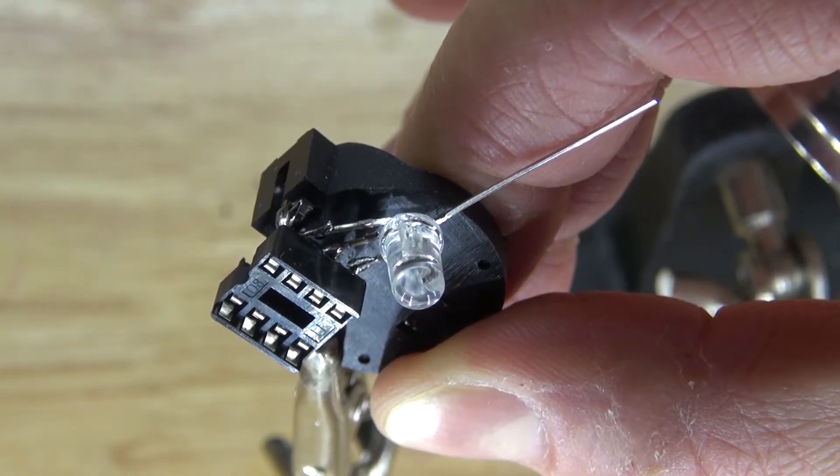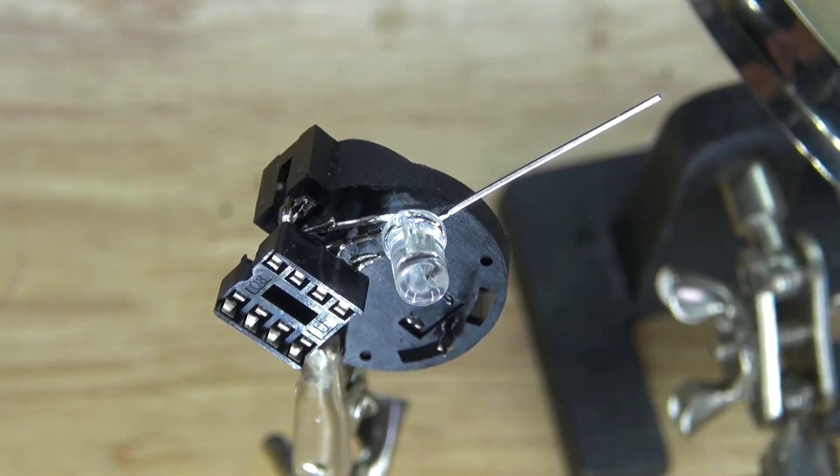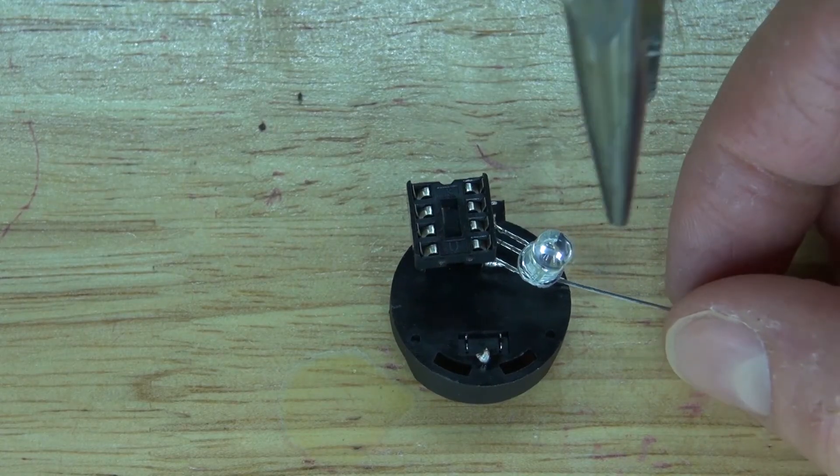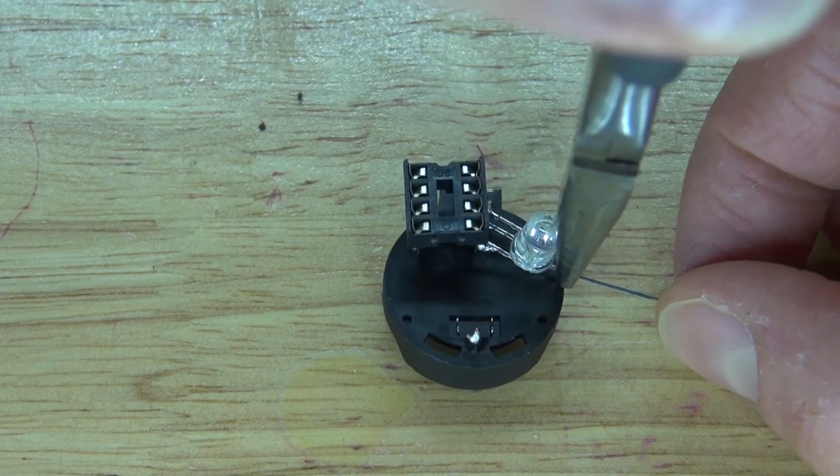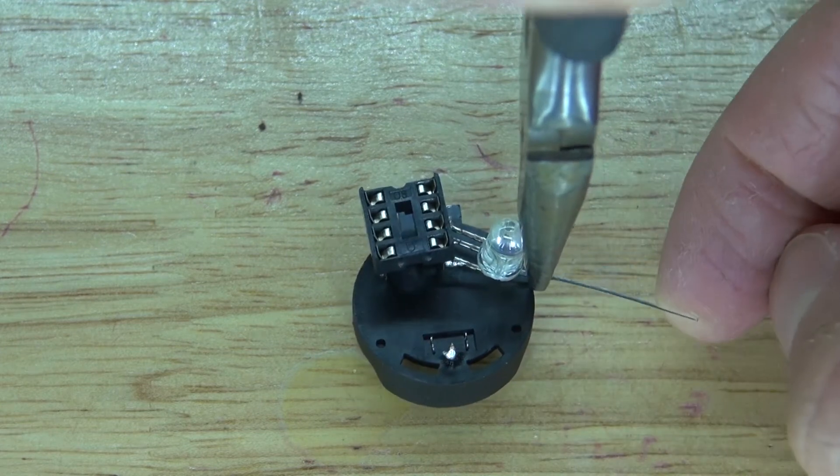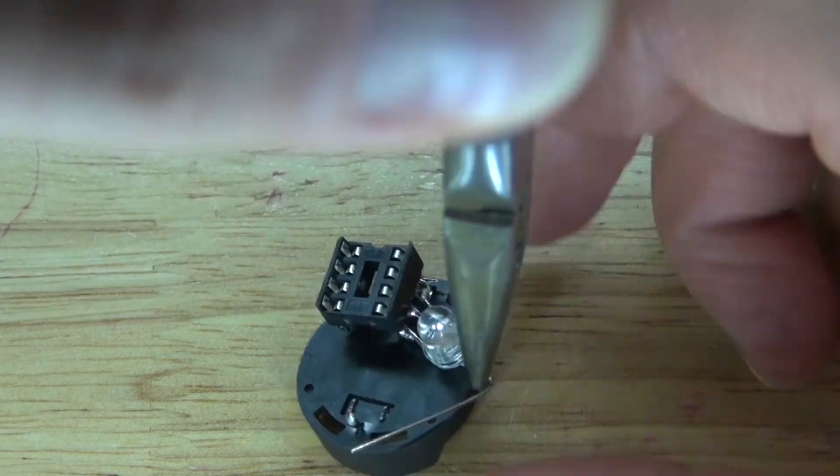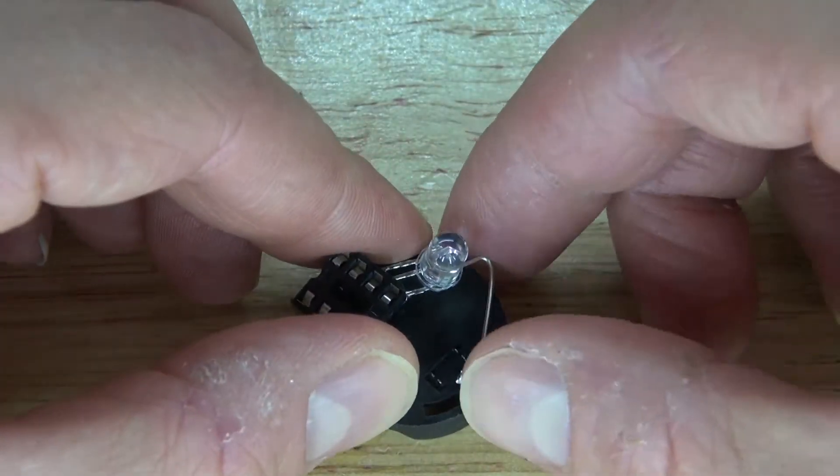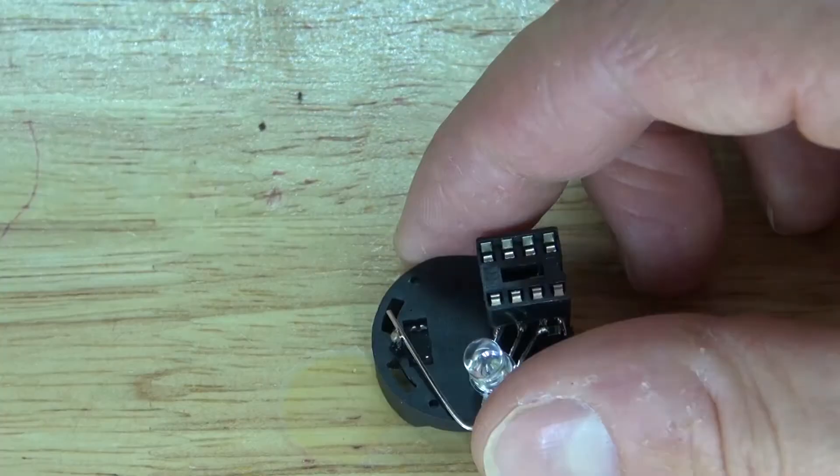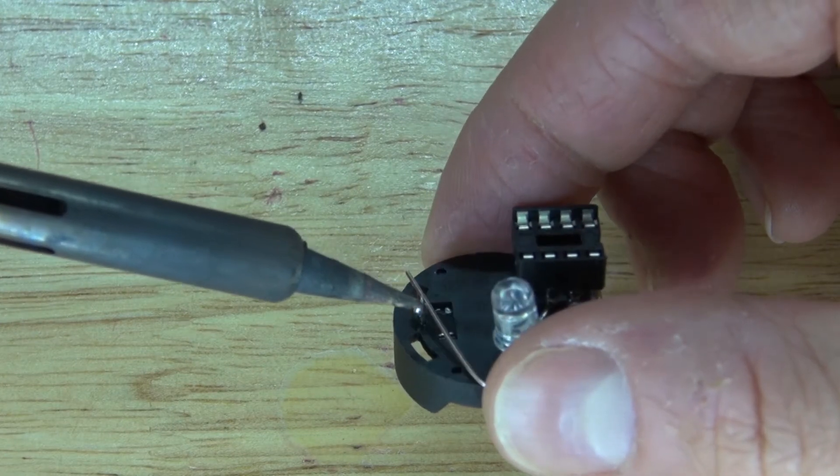And there we go, soldered into place just like this. Next I'm going to carefully bend the cathode lead to touch the negative terminal of the 3 volt button cell battery holder. Bend it over just like this. And now solder it into place.